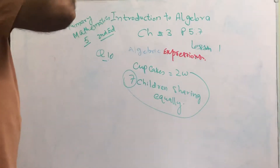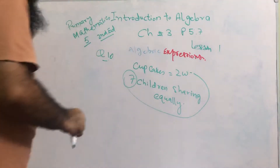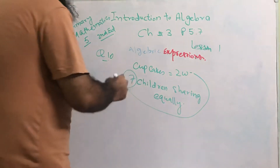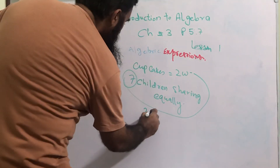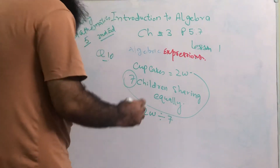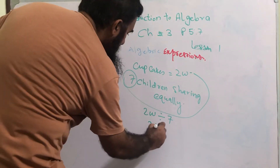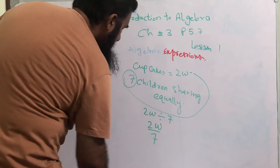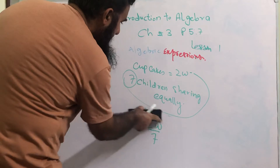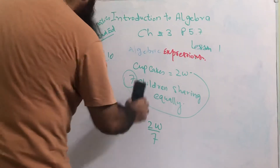These cupcakes will be divided among seven children. How many cupcakes will each child receive? We write this in algebraic expression as 2w over 7. So the expression 2w over 7 is the answer for question number 10.